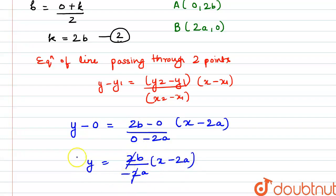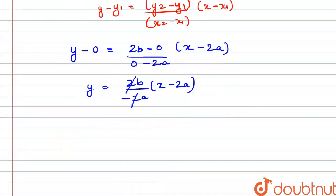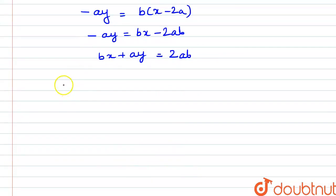So here 2 and 2 gets cancelled out and if we cross multiply, we get minus ay is equal to b into x minus 2a. And if we open this, we have minus ay is equal to bx minus 2ab and if we rearrange this, we have bx plus ay is equal to 2ab.